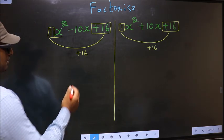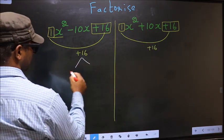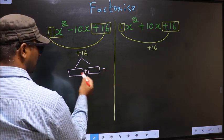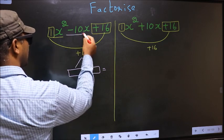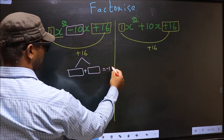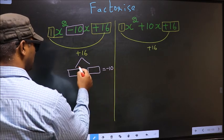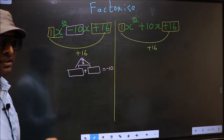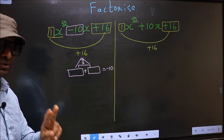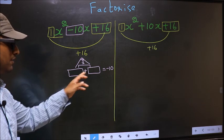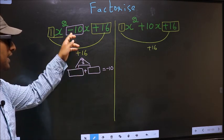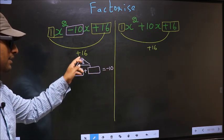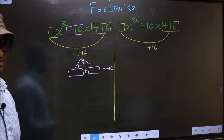Next, you should look out for two numbers such that when you add these two numbers you should get the middle coefficient, that is minus 10, and also when multiplied you should get plus 16.